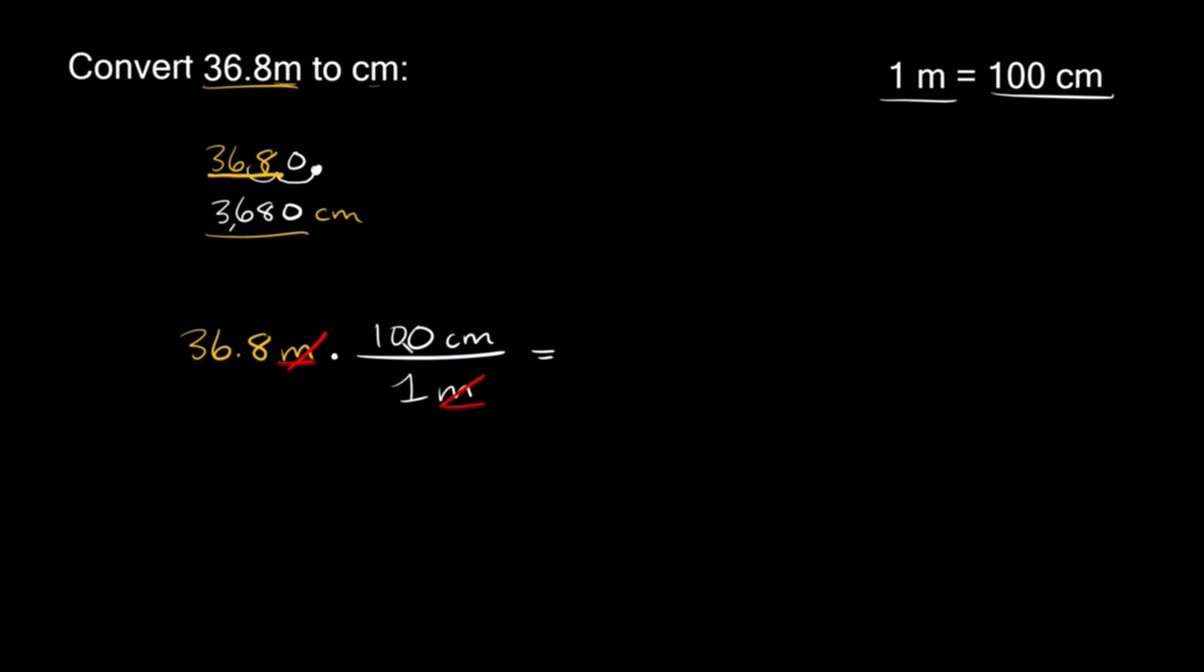So now we can simplify this. All we have to do is multiply everything on top together. So we have 36.8 times 100 centimeters, and then we're going to put that over whatever we have in the bottom here which is just a one.